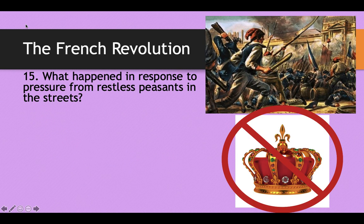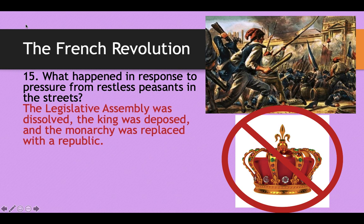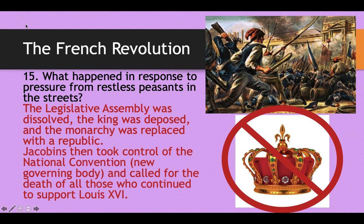In response to pressure from restless peasants in the streets, the Legislative Assembly was dissolved, the king was deposed, and the monarchy was replaced with a republic. The people who took control of that new government were the worst ones of all — the Jacobins, the most extremist, violent, radical wing of the revolution.